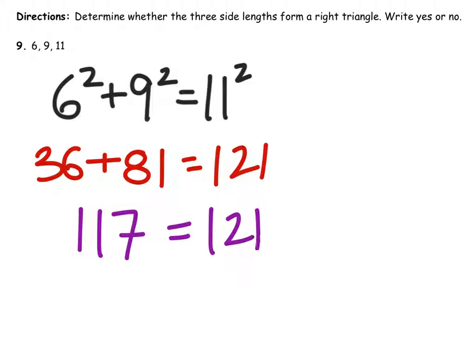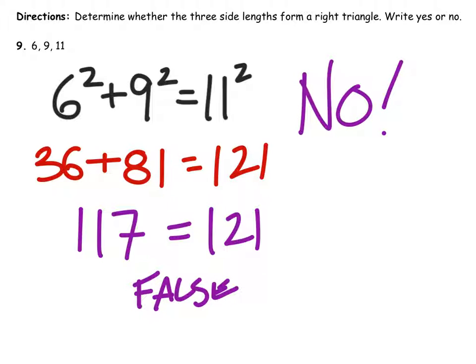Does 117 equal 121? That's false. Since it is false, the answer is no. This one would not give us a right triangle.